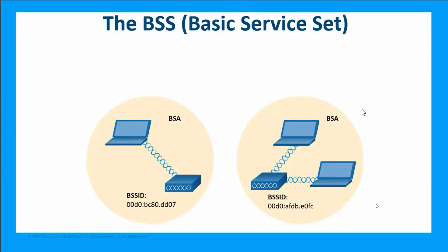Now let's introduce a couple of new terms: BSS and ESS. BSS is basic service set — providing wireless access to small deployments. A basic service set includes a BSA, or basic service area. These yellow bubbles, for example, are basic service areas — the extent of the wireless signal possible to connect to with that access point. The BSS ID is the basic service set identifier, which is the Layer 2 MAC address of your access point. Each access point has its own BSS ID, which is how we formally recognize that access point.